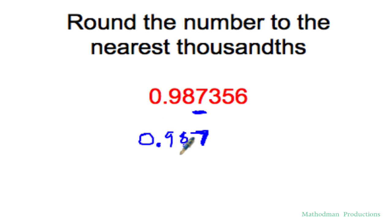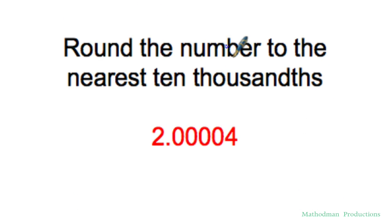Round to the nearest ten thousandths. Remember your place values: tenths, hundredths, thousandths, ten thousandths. Underline it. Look at the number to the right. It's 4 and below, so that just turns into a zero. I end up getting 2.0000, which is the same thing as 2. That's it, pretty easy, right?